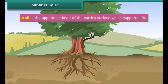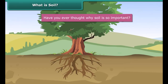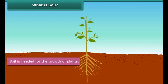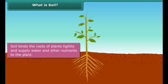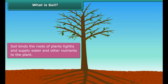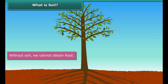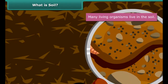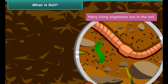Soil is the uppermost layer of the earth's surface which supports life and it is found everywhere. But have you ever thought why soil is so important? Well, soil is needed for the growth of plants. It binds the roots of plants tightly and supplies water and other nutrients to the plant. Without soil, we cannot obtain food. Moreover, many living organisms live in it. So we can say that soil is a very essential part of our life.